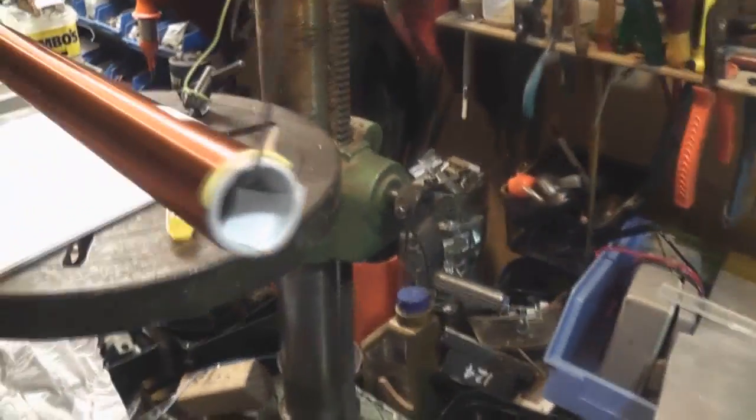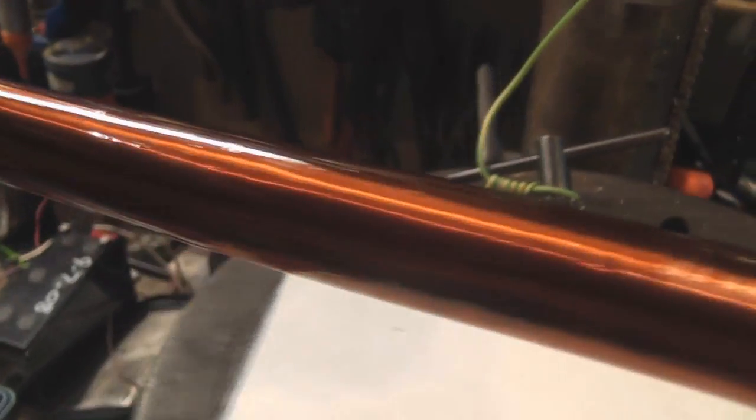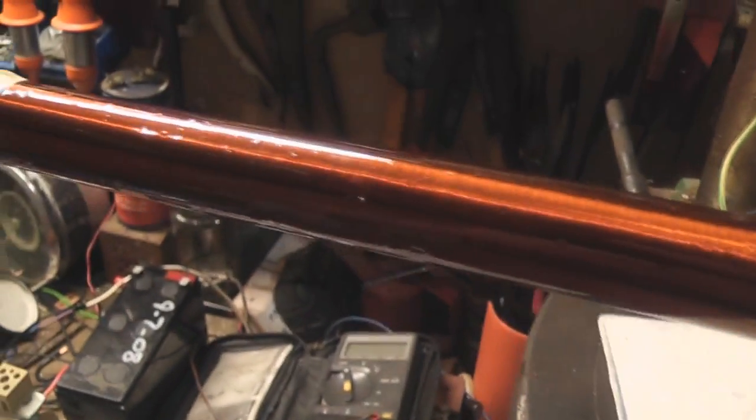I've got the varnish out and I'm just applying a coat of varnish over the center core, the 1,344 turns. Those bloody G clamps are handy.